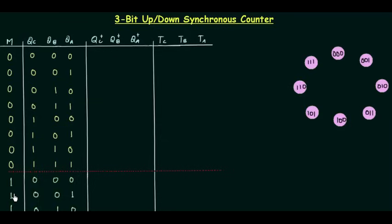The logic is the same as the asynchronous version, but the design is different. Let's start with the state diagram. We have 8 states because a 3-bit counter gives 2 to the power 3, which equals 8. The maximum count is 8 minus 1, which is 7, represented by 1-1-1. The initial state is 0-0-0, and we start counting from this state.